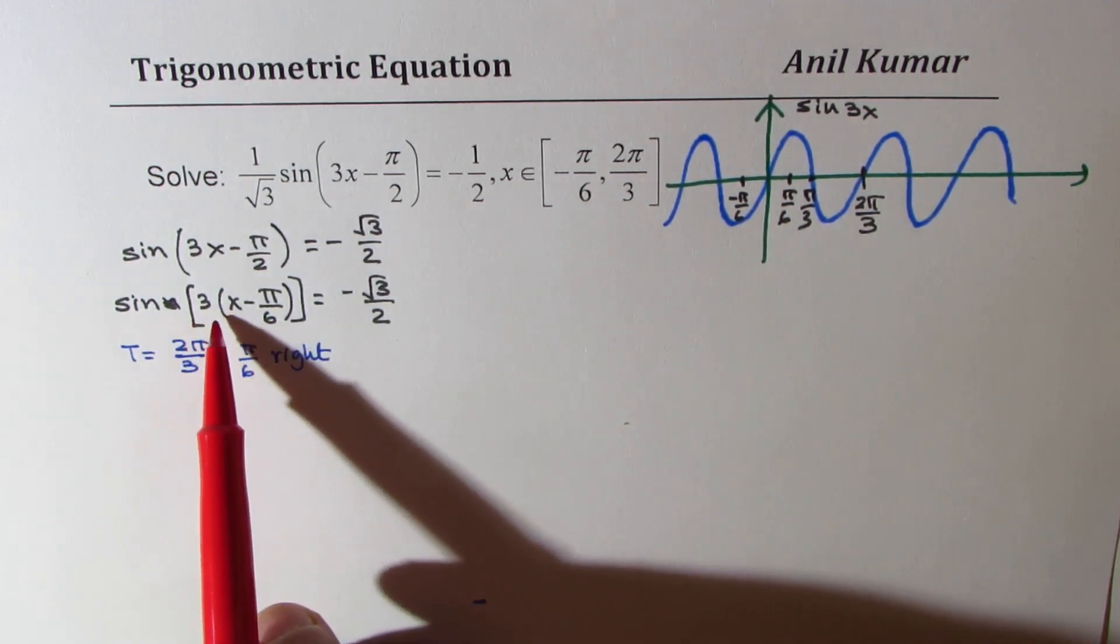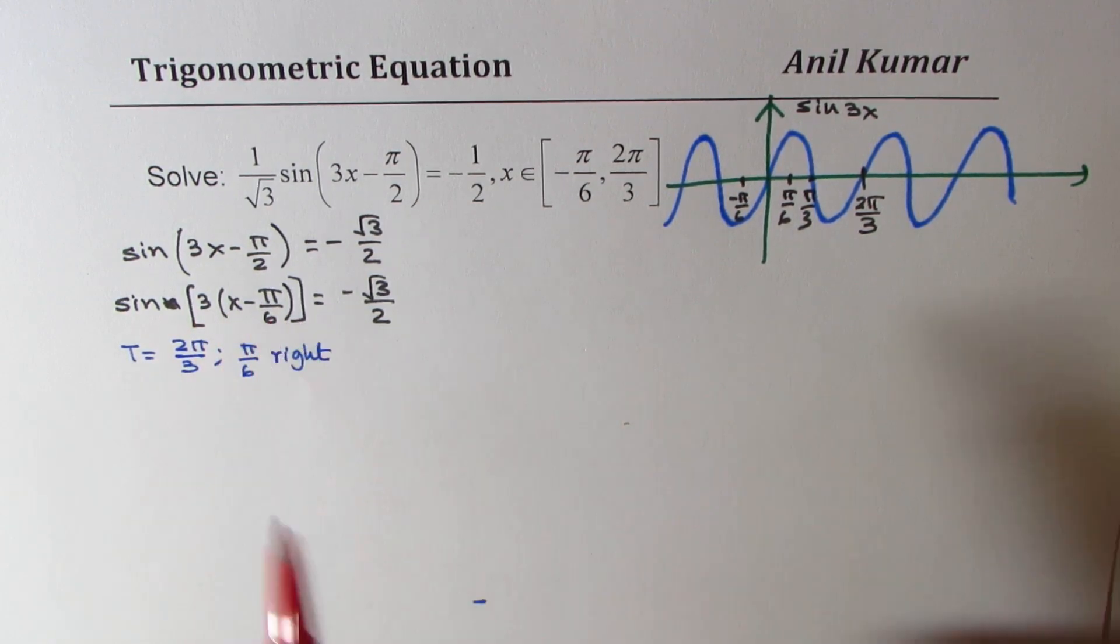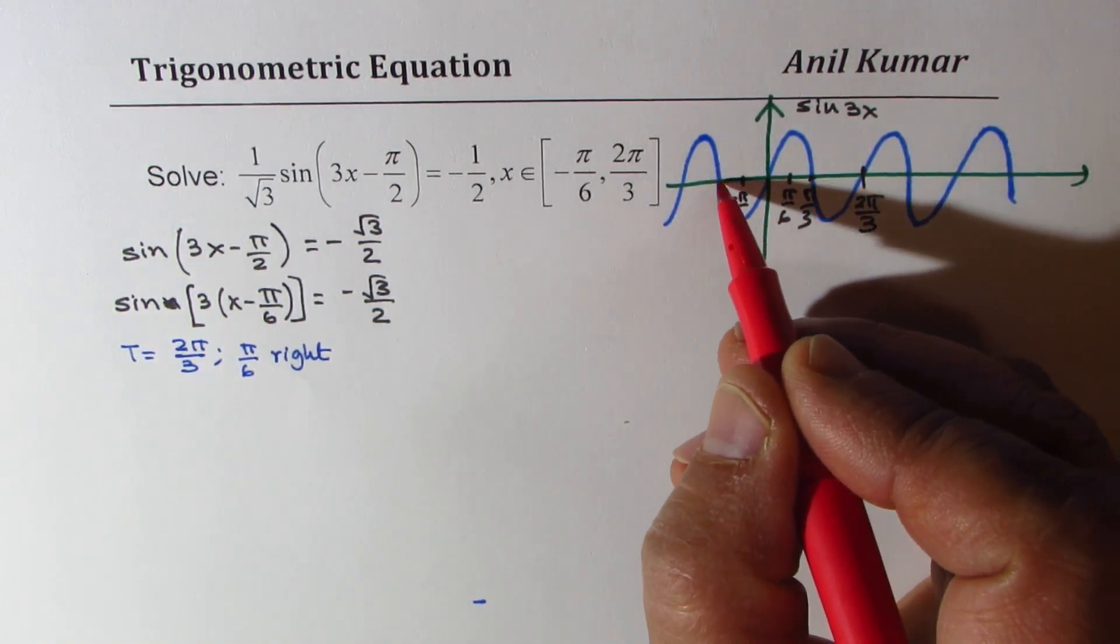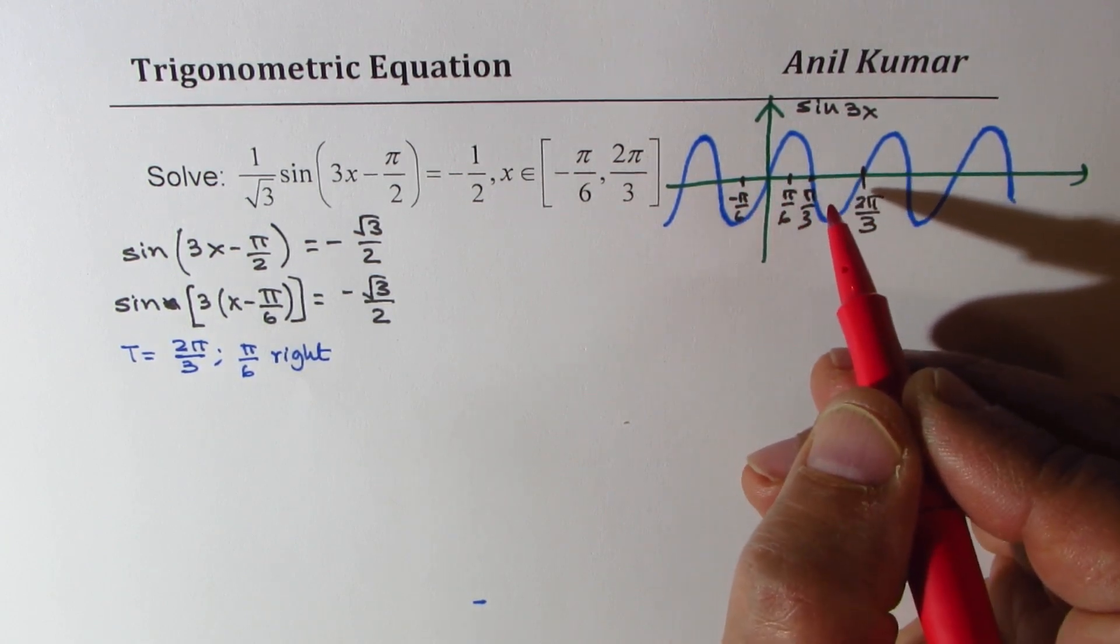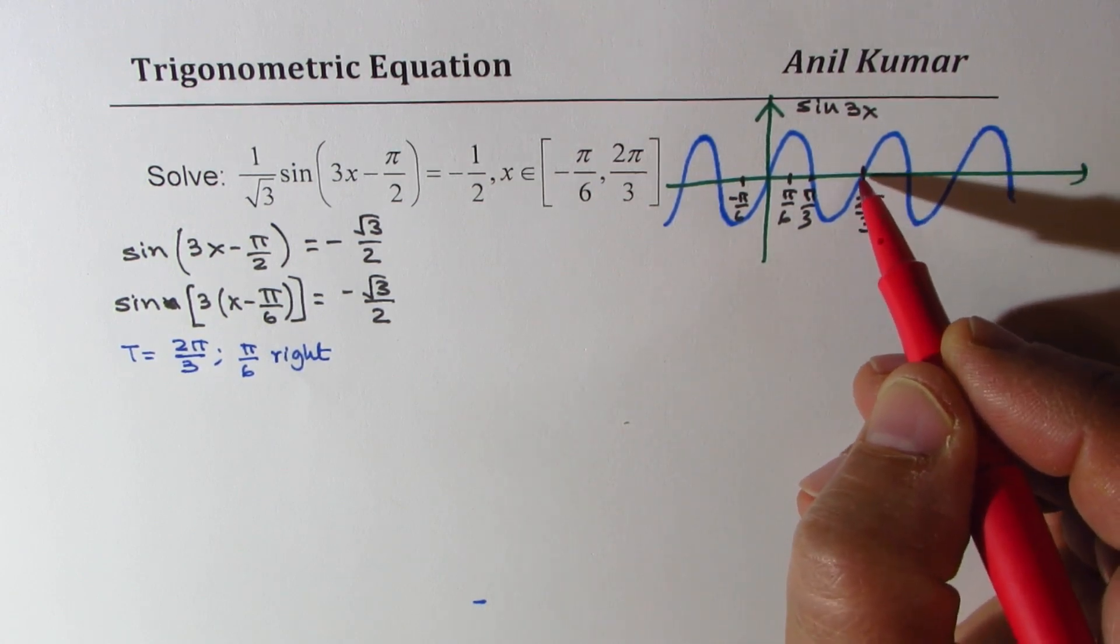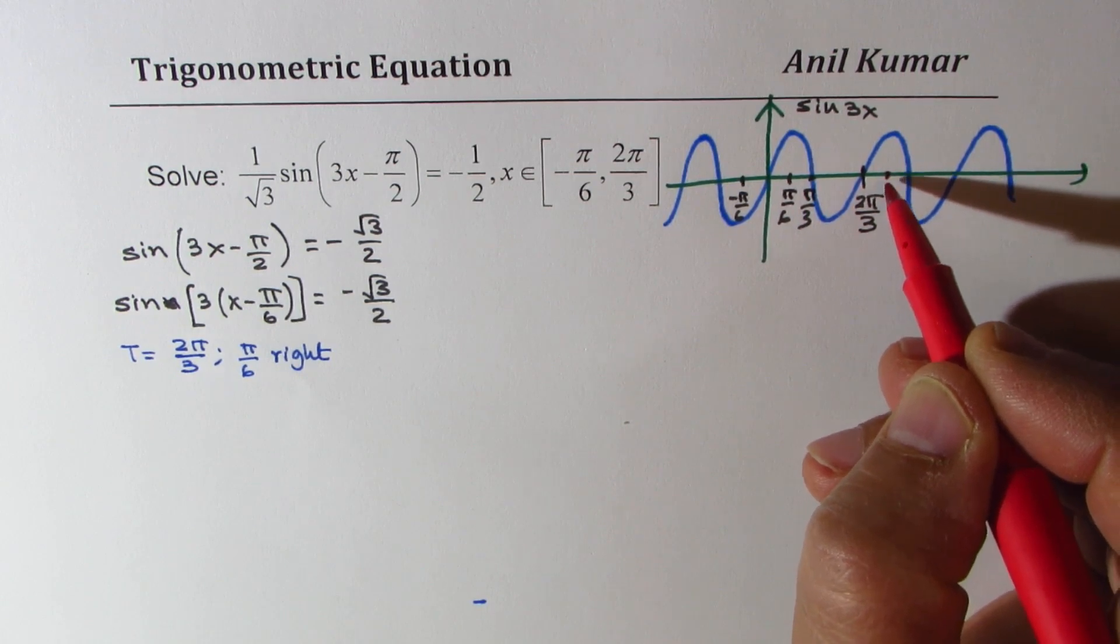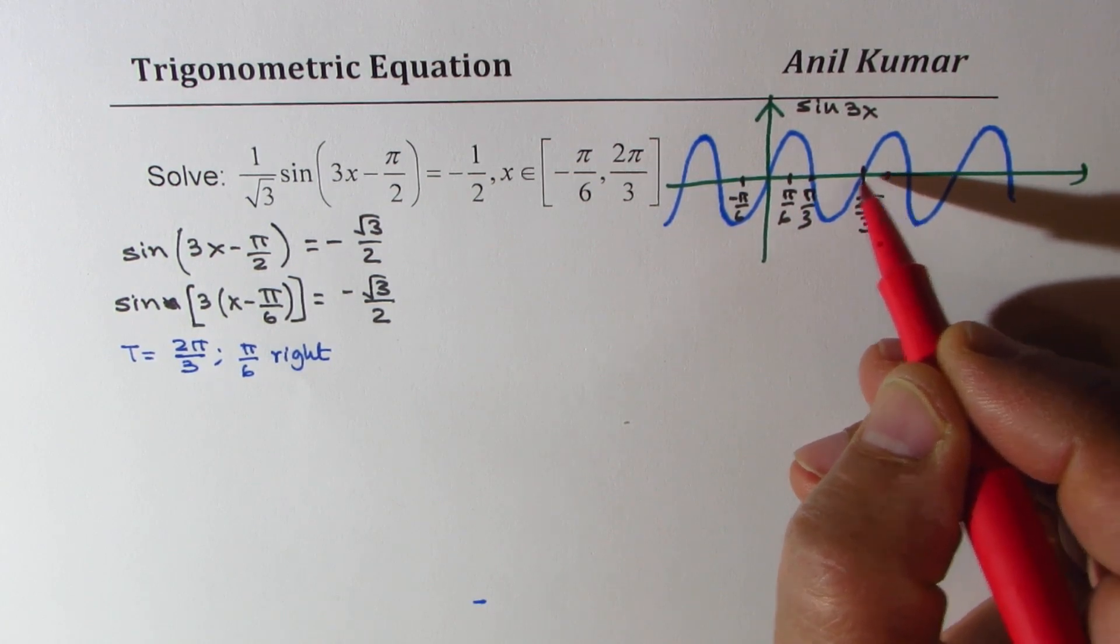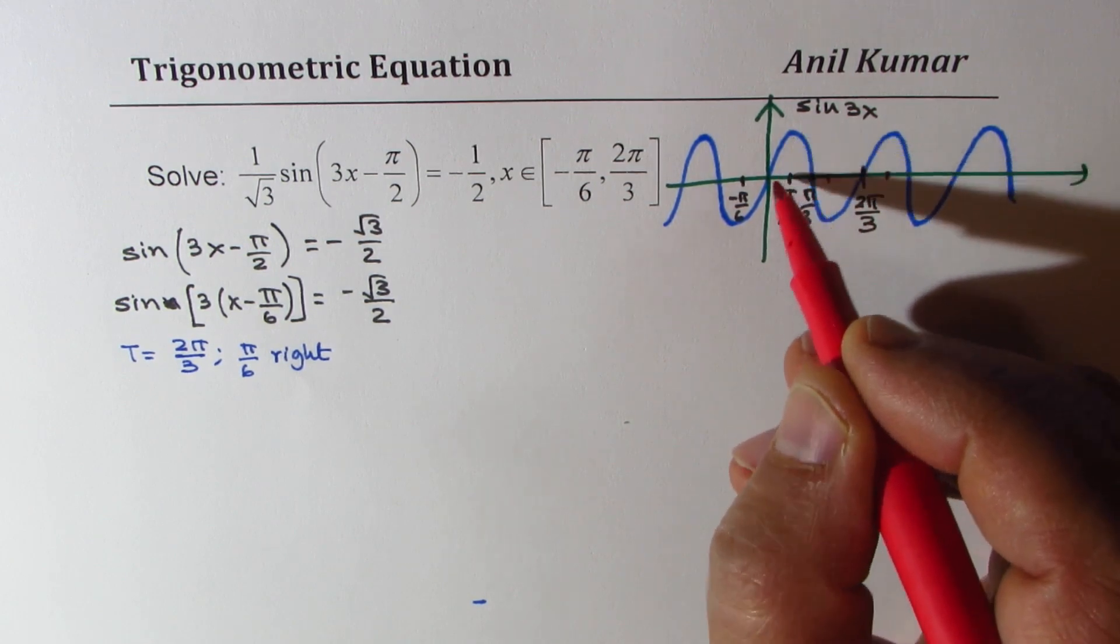Now, what is sine 3 times x minus pi by 6? That means each point moves pi by 6 to the right. Pi by 6 is like quarter of a cycle here. So we'll move each point pi by 6 to the right.